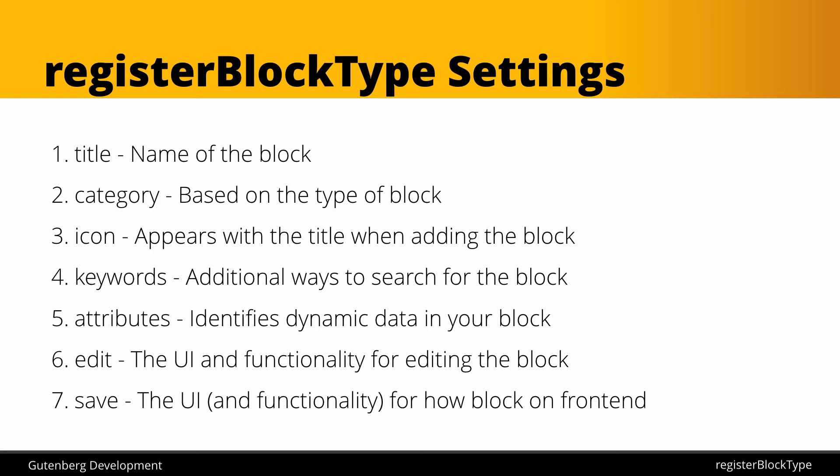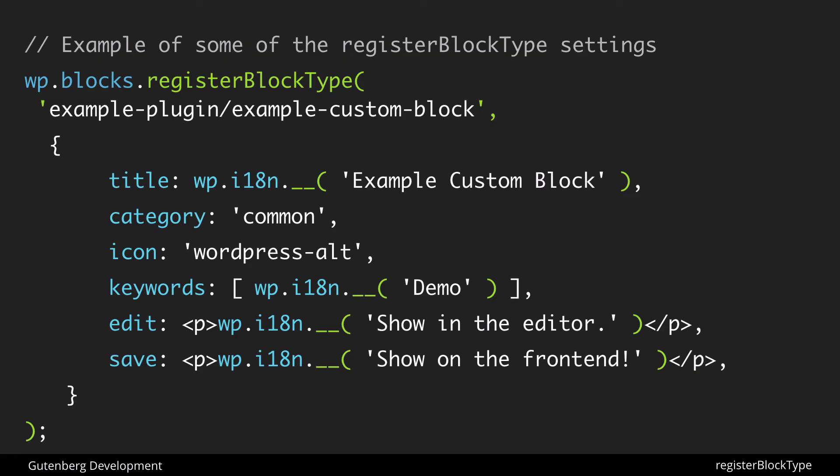If we take a look at this code sample, we can see all of these in action. The title is being localized through wp.i18n.__, which is a library to make our text translatable — in this case the human-readable name is 'Example Custom Block.' The category is set to 'common,' which is kind of the default. The icon is a dashicon that will display a WordPress icon. Then we have our keywords — so if somebody searches for 'demo' they'll find our block even though that word isn't in the title.